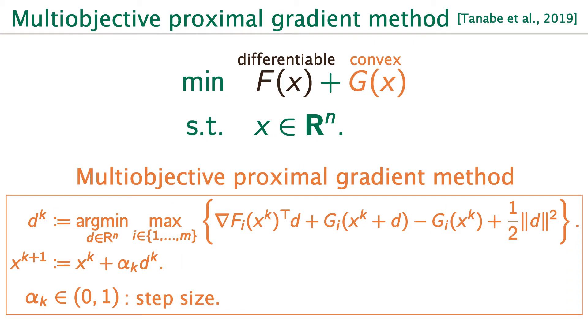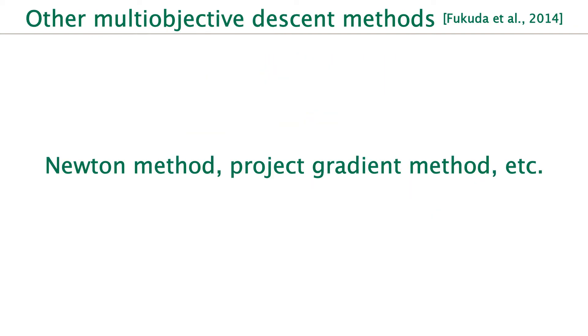Okay, this is the multi-objective version. Similarly to the steepest descent method, dk is a descent direction due to the max function. Multi-objective steepest descent method and proximal gradient method are both shown to converge to Pareto solution under appropriate settings. For simplicity, I don't introduce the proof of the theorem, but the proof is more complex than the proof in single-objective cases.